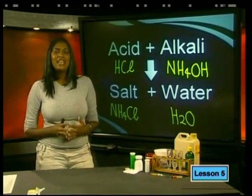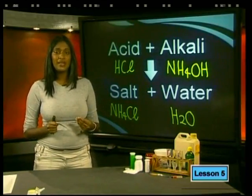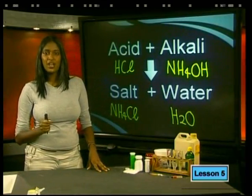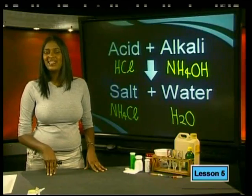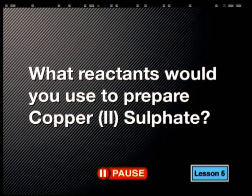Now that we understand that alkalis are soluble bases and only the group 1 metal oxides form strong alkalis, let's move on to other metal oxides. Group 2 metal oxides are partially soluble, but most other metal oxides are less soluble. These metal oxides will also neutralize an acid, but the process may take longer or we will need to adapt the method. Can you work out what we need if we want to make copper-2-sulfate?